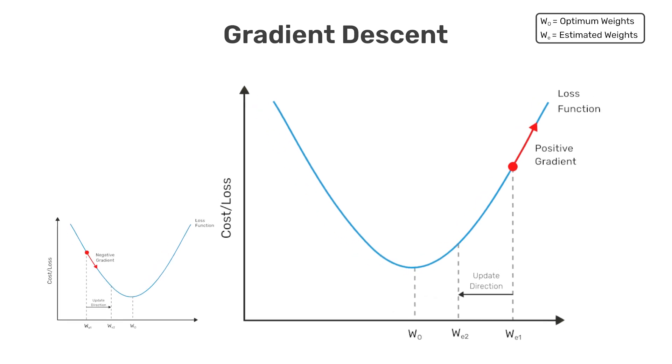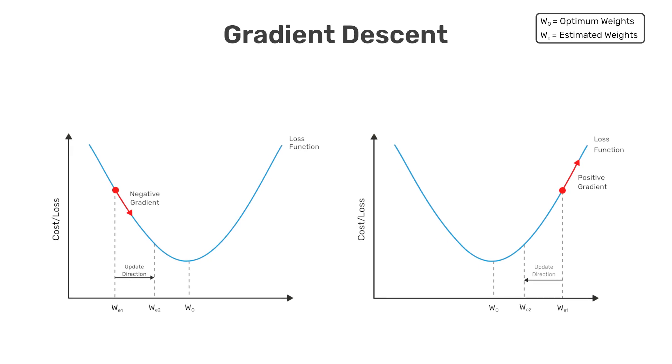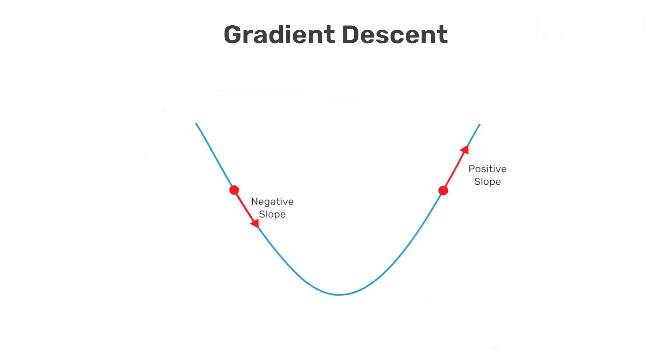Before we continue, we just wanted to clarify one point in case you're wondering. First, notice that we're using the terms gradient and slope interchangeably. But the main thing we wanted to point out here is that in both figures, the arrow that we've drawn to represent the gradient is pointing to the right. In one case, the arrow is pointing down and to the right, and in the other, the arrow is pointing up and to the right. But don't be confused by the fact that both arrows are pointing toward the right. What's important is the sign of the gradient.